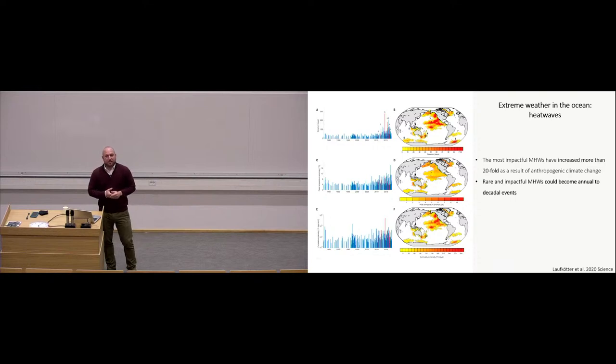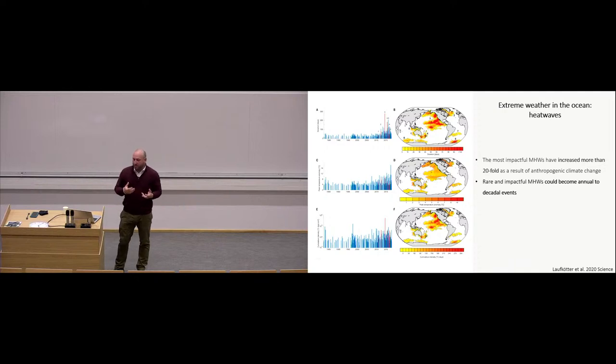One of the recent climate attribution studies looked at marine heat waves, so the most impactful marine heat waves. And what they found is that they've increased more than 20-fold in recent years as a result of anthropogenic climate change. So to the left, you can see the three graphs that show the duration of the events, the peak temperature anomaly, and the cumulative intensity, which is a function of those two plus the area that they affect. And what they suggest is that these rare and impactful marine heat waves could become annual to decadal events. So this is clearly a dynamic that we need to try to resolve. We need to try to have the tools to understand these ecological implications and to deduce its effects on key cycles in the ocean.